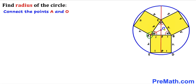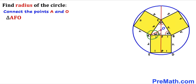We connect point A to center O, giving us right triangle AFO. We can see that AO is the angle bisector of angle BAC, so half of that 60-degree angle is 30 degrees. Therefore, angle FAO is 30 degrees.